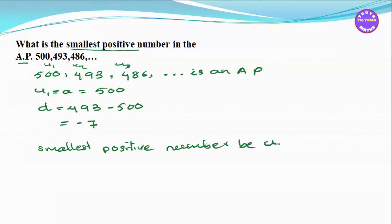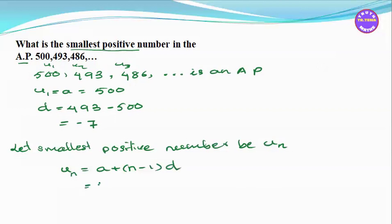We let UN be the general term. Using the formula UN equals a plus (n minus 1) into d. We substitute: a equals 500, and d equals minus 7, so (n minus 1) into d is (n minus 1) times minus 7.